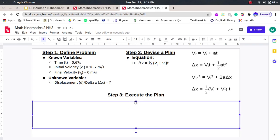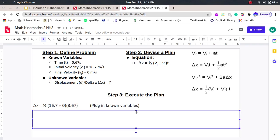Now step three. Let's actually execute the plan. So if you guys remember that the first thing to do is to plug in our known variables. So it looks something like delta x equals 1 half times 16.7, which is our initial velocity, plus zero, which is our final velocity, times 3.67, which is our time.